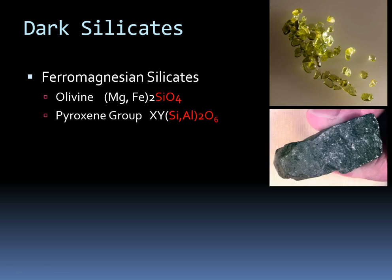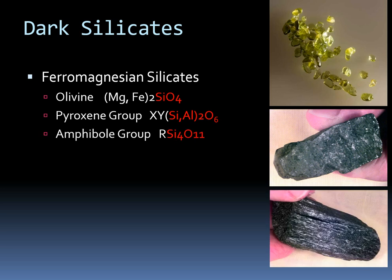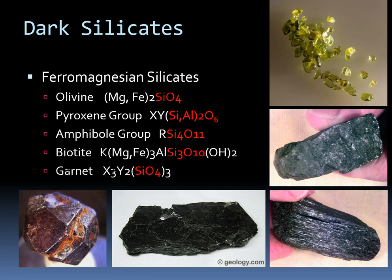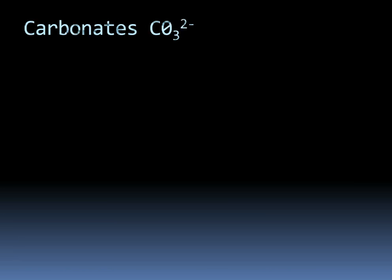We have pyroxenes — this is a big group with lots of different types. In the cation position there are many different elements, but it still has silicon and oxygen. We also have the amphibole group, where the chemistry can vary quite a bit, but you've always got four silicons and eleven oxygens. And biotite — that other mica. The only difference between biotite and muscovite is that iron and magnesium. And last but not least, we have garnets, which are silicates that tend to be dark and have heavier elements.